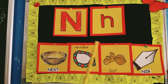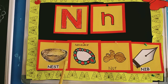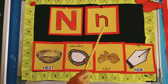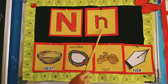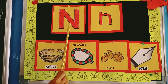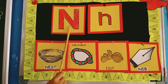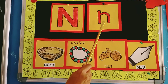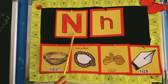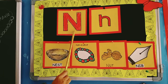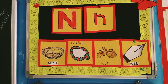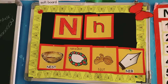Similarly, you have to identify a few pictures which start with letter N and revise at home. Identify capital N and small n. And its sound is N. Okay kids, take care. Keep practicing. Bye bye.